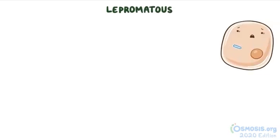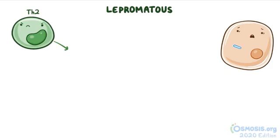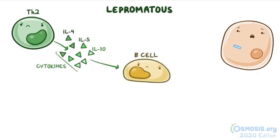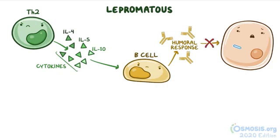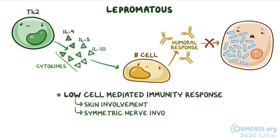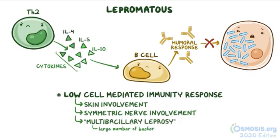In the lepromatous form, the infection induces a Th2 cell response, and Th2 cells secrete interleukin-4, interleukin-5, and interleukin-10. These cytokines signal B cells to make antibodies against Mycobacterium leprae, so this is a humoral, antibody-based response. This response is not effective in killing intracellular pathogens like Mycobacterium leprae, that can escape humoral immune mechanisms and replicate inside macrophages. So the inefficient immune response in the lepromatous form is sometimes called a low cell-mediated immunity response. This leads to extensive skin involvement and symmetric nerve involvement, and the lepromatous form is also called multibacillary leprosy, because of the large number of bacteria found in the lesions.